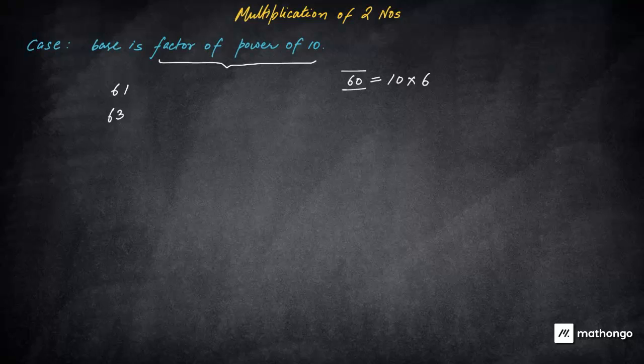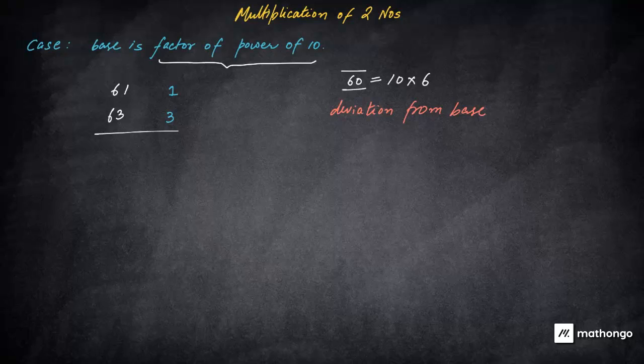So we will study their deviation. What we did earlier also, if you remember, we studied deviation from base. So we'll take their base as 60. And as we did earlier, deviation from the base. So what we should write here, one, this is deviated by three. And as we did in the last class of Vedic Maths, what we'll do, we'll cross add, cross addition becomes 64.